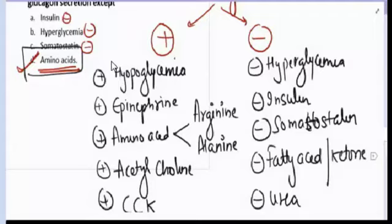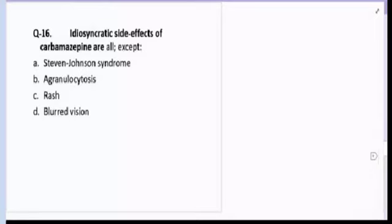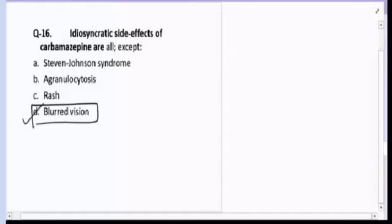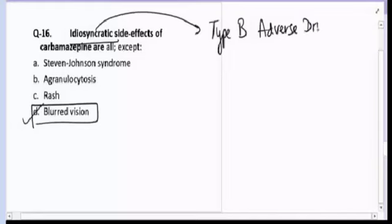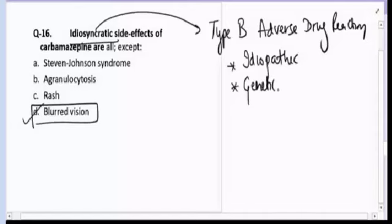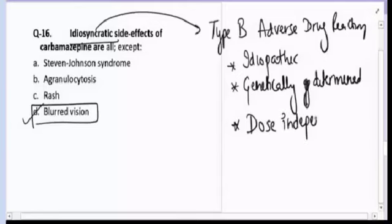Question number sixteen: idiosyncratic side effects of carbamazepine are all except — Stevens-Johnson syndrome, agranulocytosis, rash, or blurred vision? The correct answer is D, blurred vision. Idiosyncratic reactions are type B adverse drug reactions — they are idiopathic, genetically determined, and dose independent.